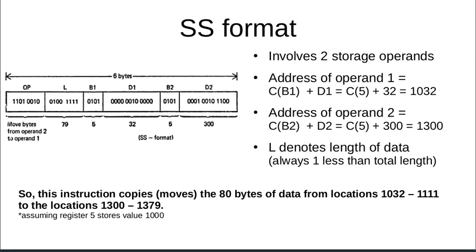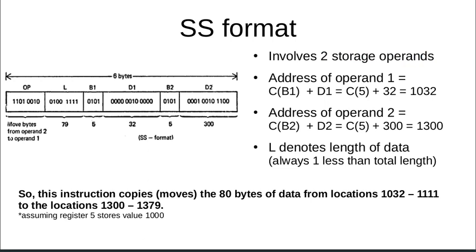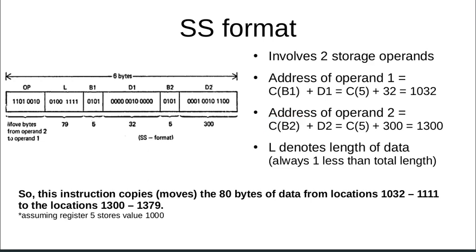The SS format uses two storage operands. The RR format used only register operands, the RX format used a register and a storage operand, and the SS format involves two storage operands with no register operand. There is an opcode and two addresses: B1, D1 and B2, D2. Address of operand 1 is content of B1 plus D1. Assuming register 5 contains 1000 and D1 is 32, the address is 1032. Similarly, address of operand 2 is content of B2 plus D2, giving address 1300 if displacement D2 is 300.